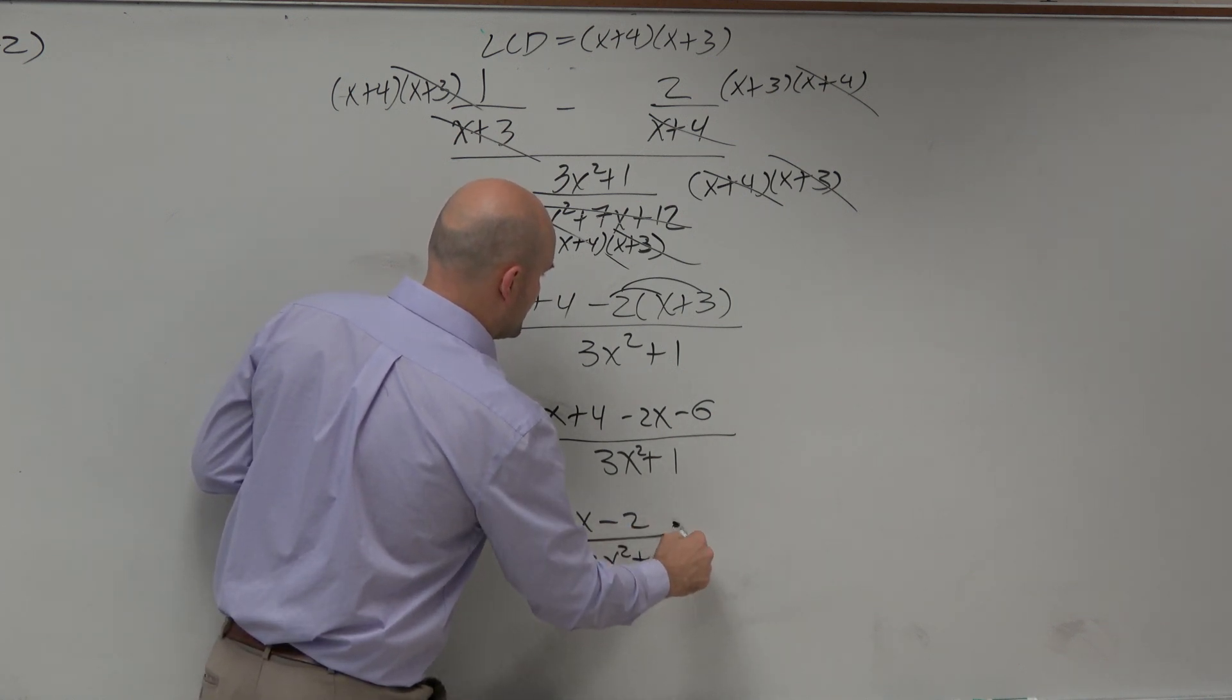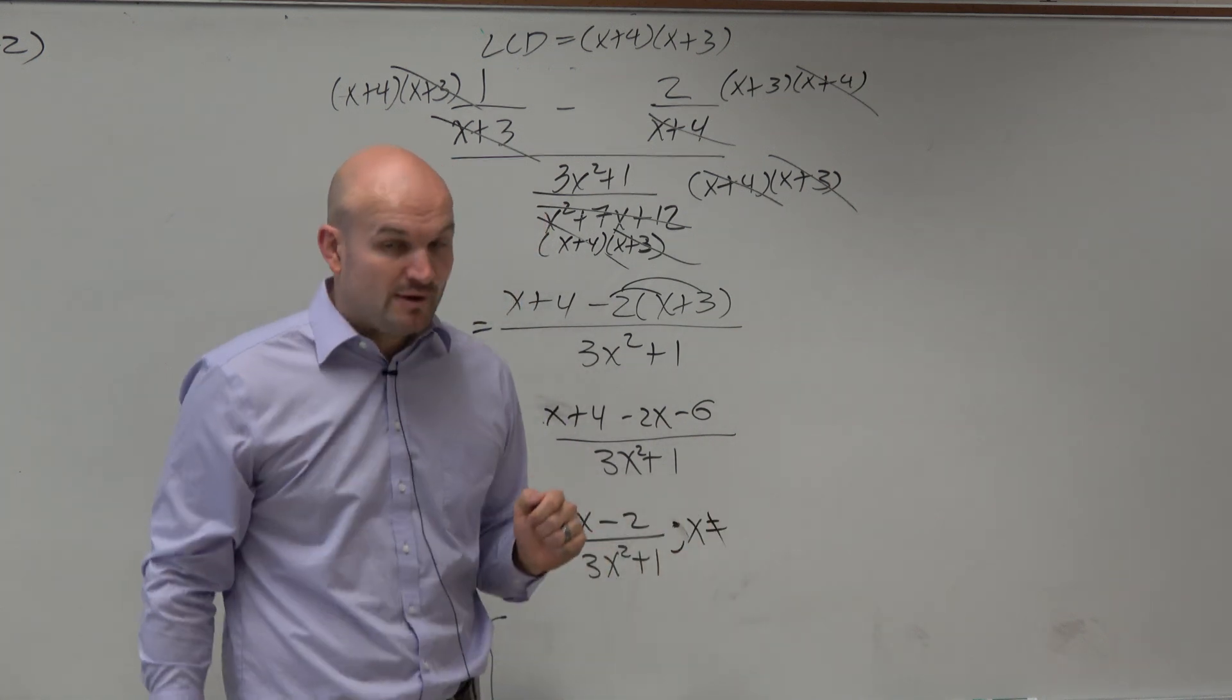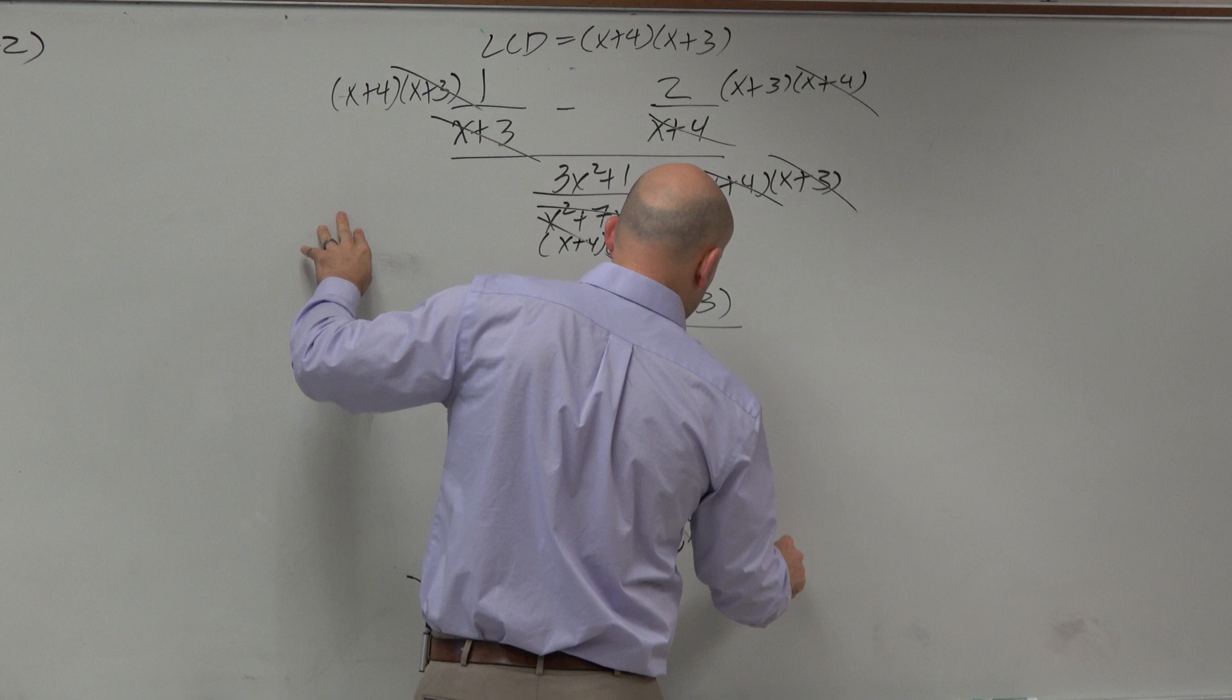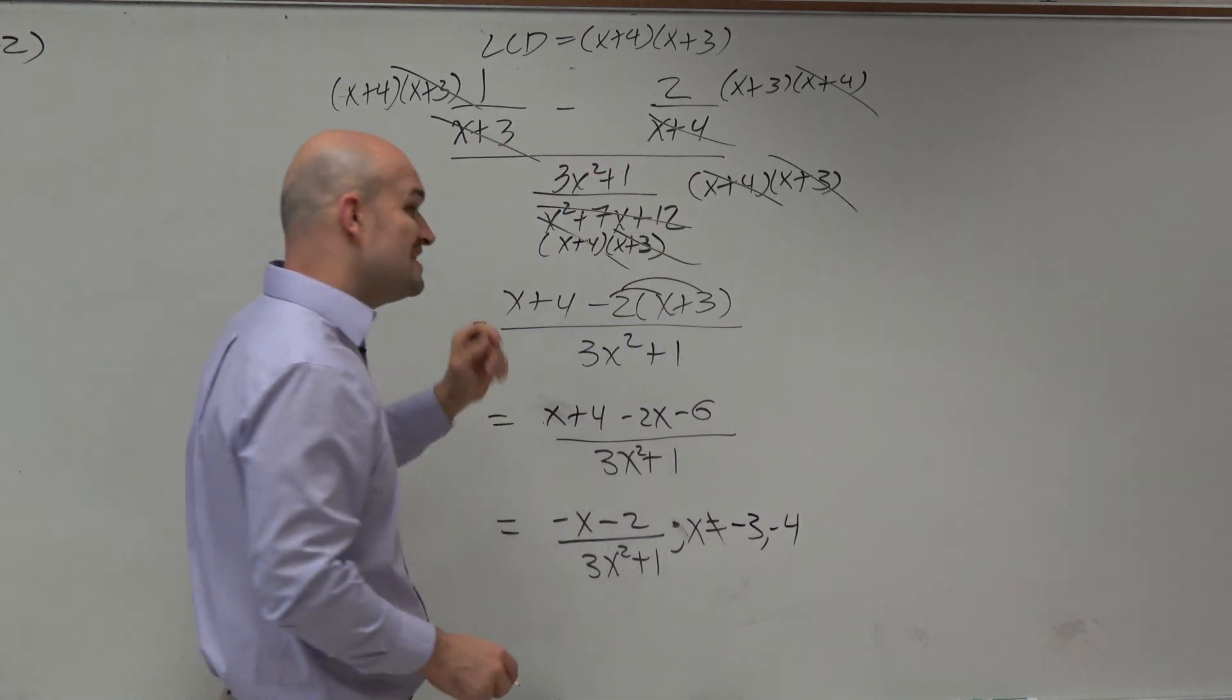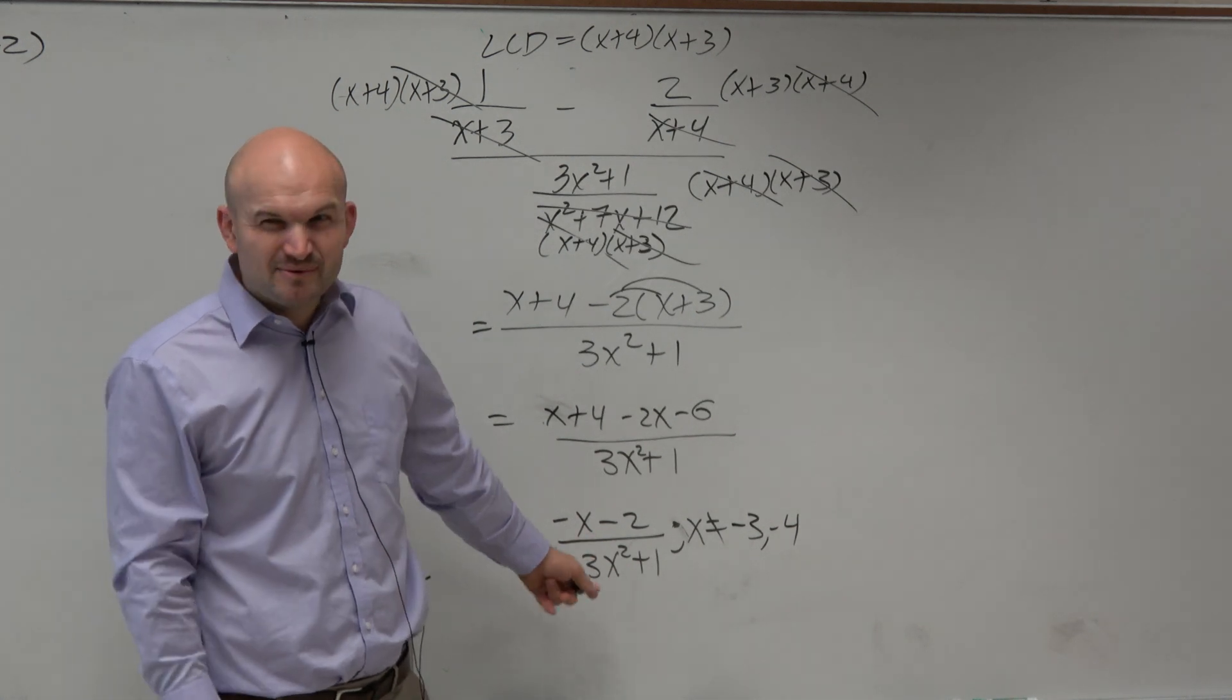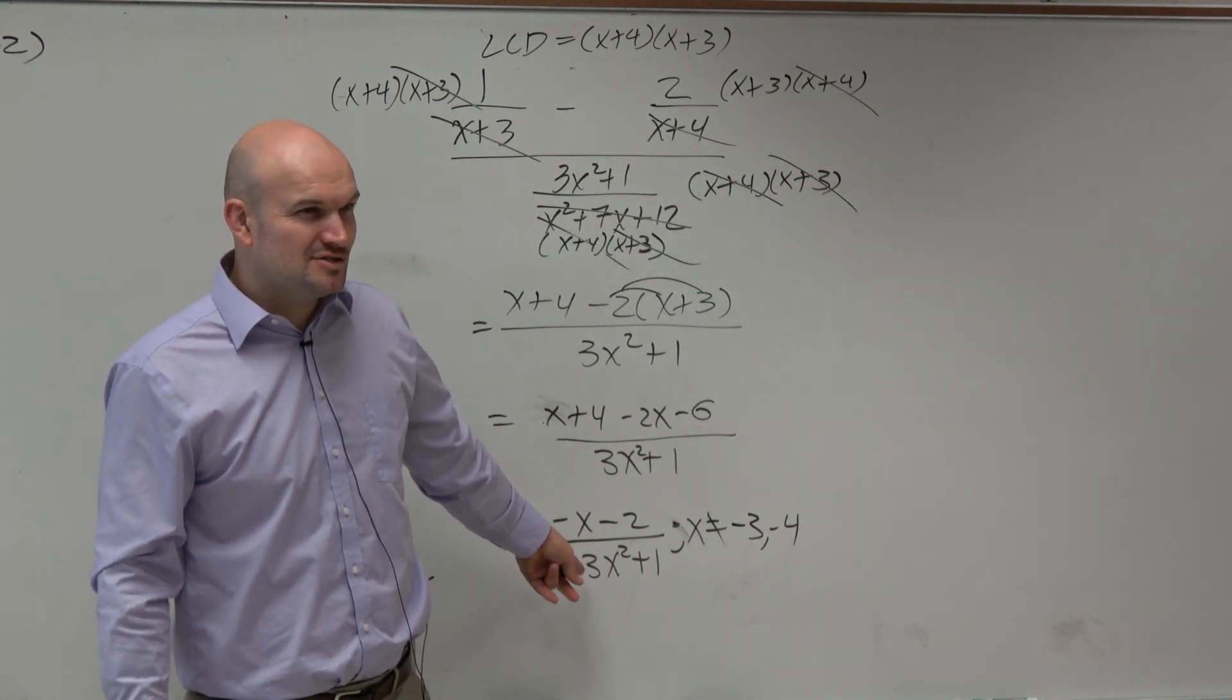All right, now let's go and look at our excluded values. From the original equation, we know that x cannot equal negative 3 and negative 4. And then we say from the simplified equation, we can't make this equal to 0. But does anybody recognize something when this is set equal to 0? What type of solutions we have?